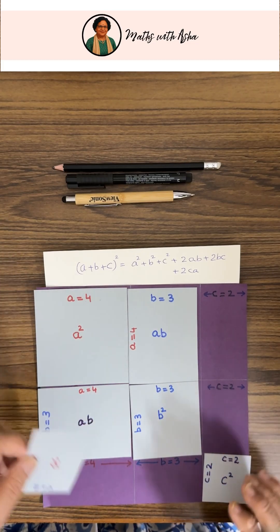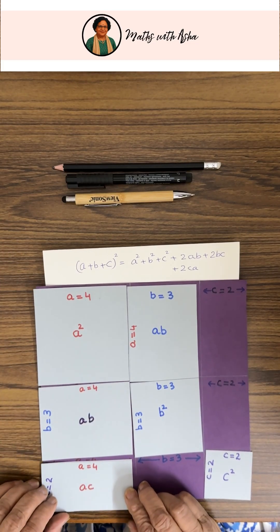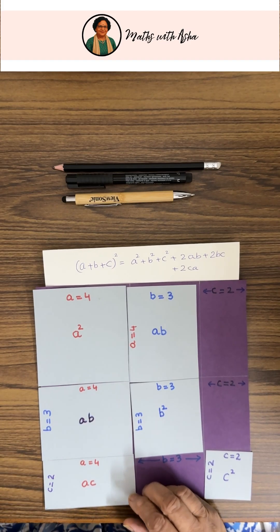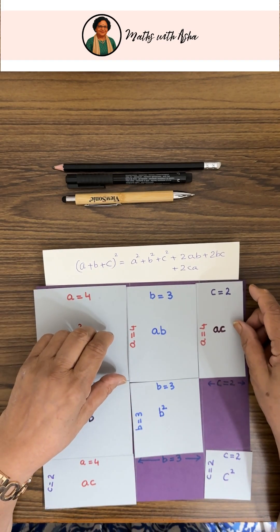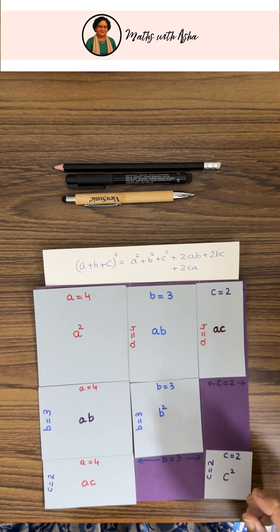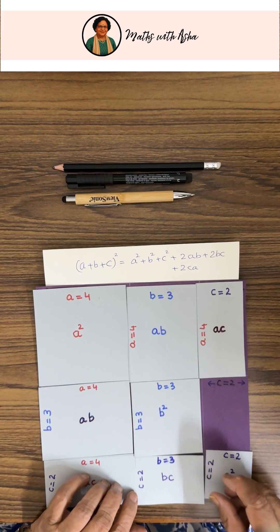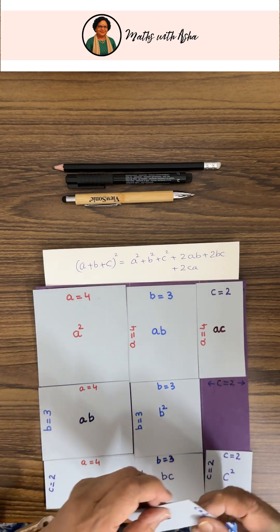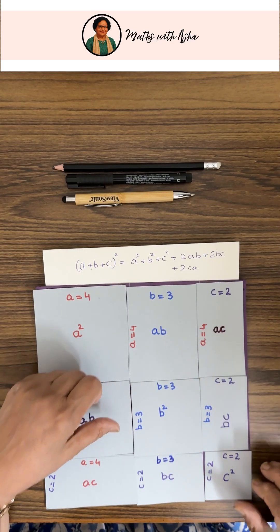We had taken some cutouts before. This is your a into c and this is also your a into c, and this is your bc and this is also b into c.